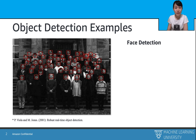About 20 years ago, researchers had already started to actively build some object detection models. Here is a visual face detection framework by Paul Viola and Michael Jones. It's capable of processing images extremely rapidly while achieving high detection rates. As we can see, it can detect almost all the faces in this image.